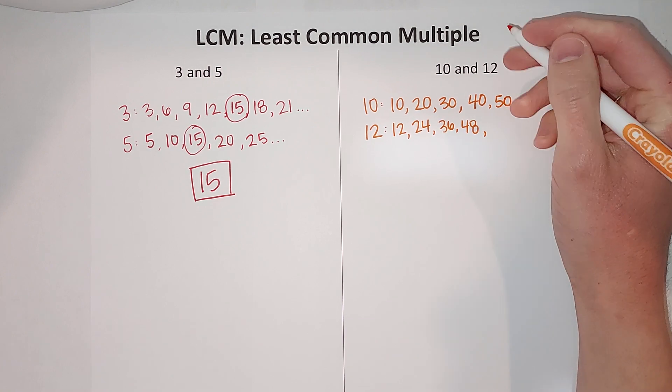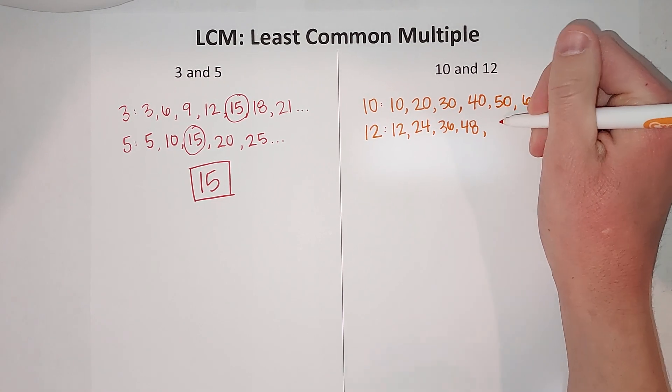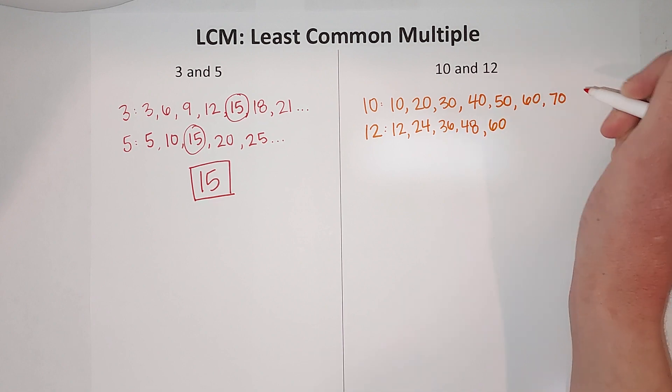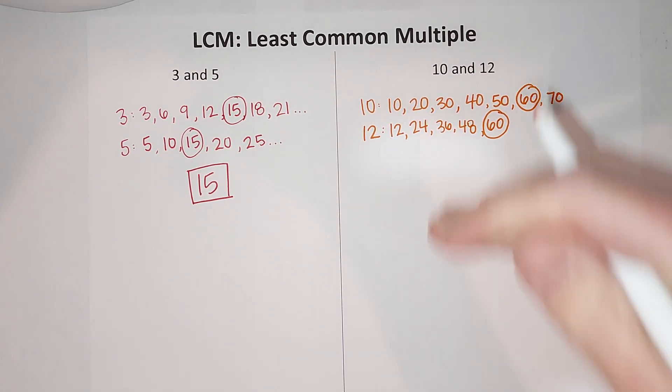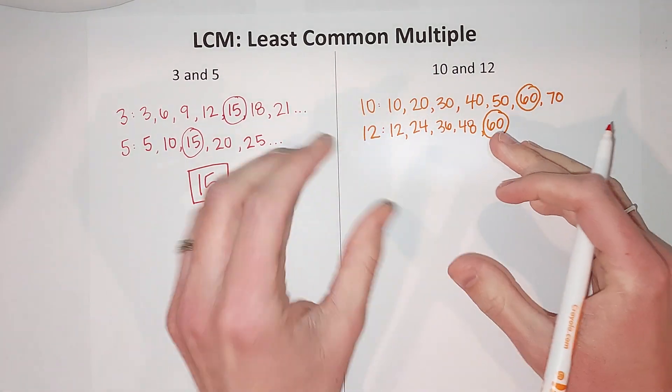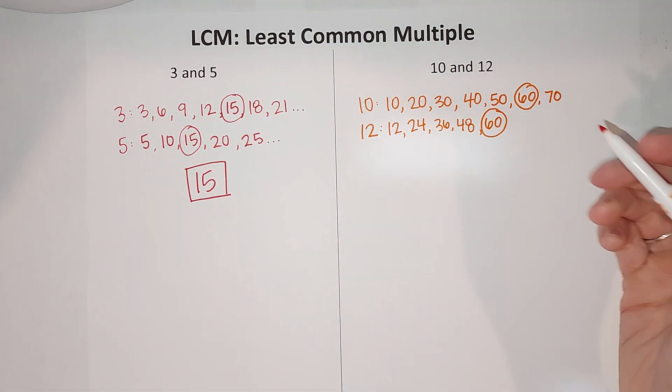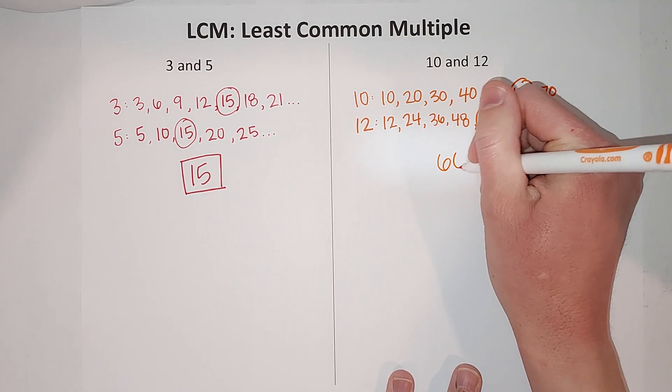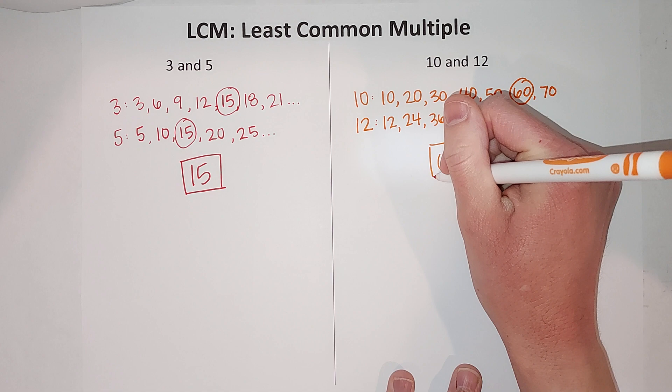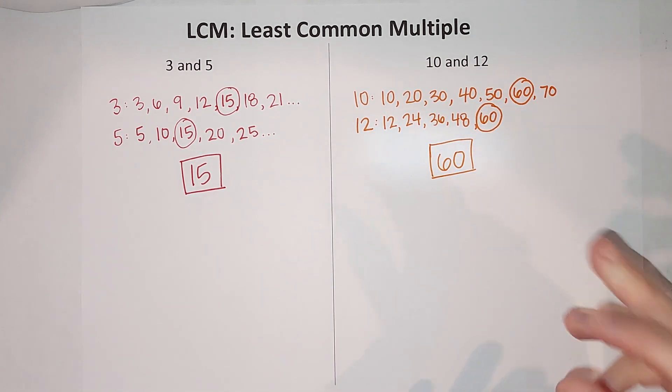48 plus 12 gives me 60. Oh, and look, there we go. I went far enough. So here we have a 60 and a 60. Those are the smallest multiples, the least common multiples of 10 and 12. So my answer there is 60. Hopefully that wasn't too bad. If you are learning GCFs as well, I'll link a video here. Hopefully that made sense and you can get your work done.